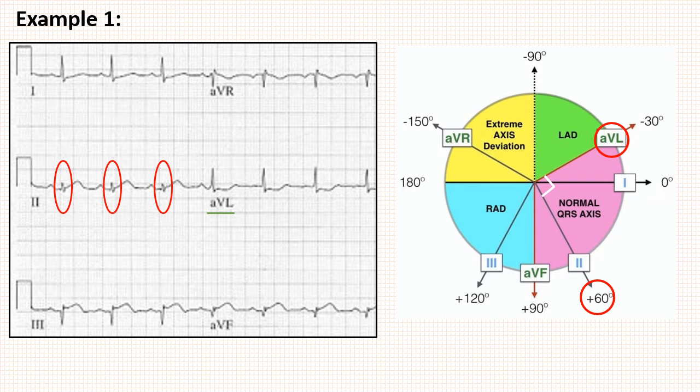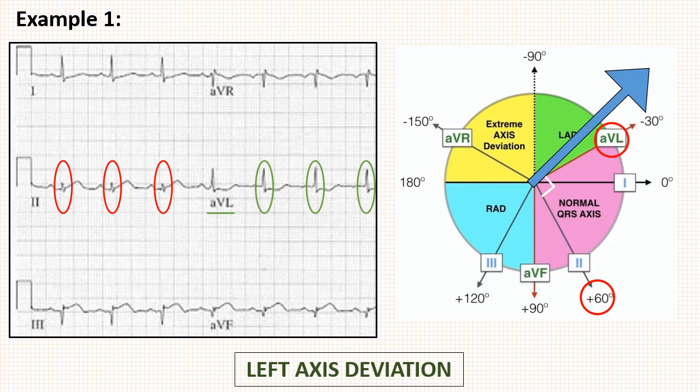Now the third step: we have to see the direction of waves in this perpendicular lead, and we can clearly see that the direction of the wave is predominantly positive. As we already discussed, if the direction is predominantly positive, the axis or depolarization vector is along the lead. So we can say the axis for this ECG is along the aVL, which means there is left axis deviation.